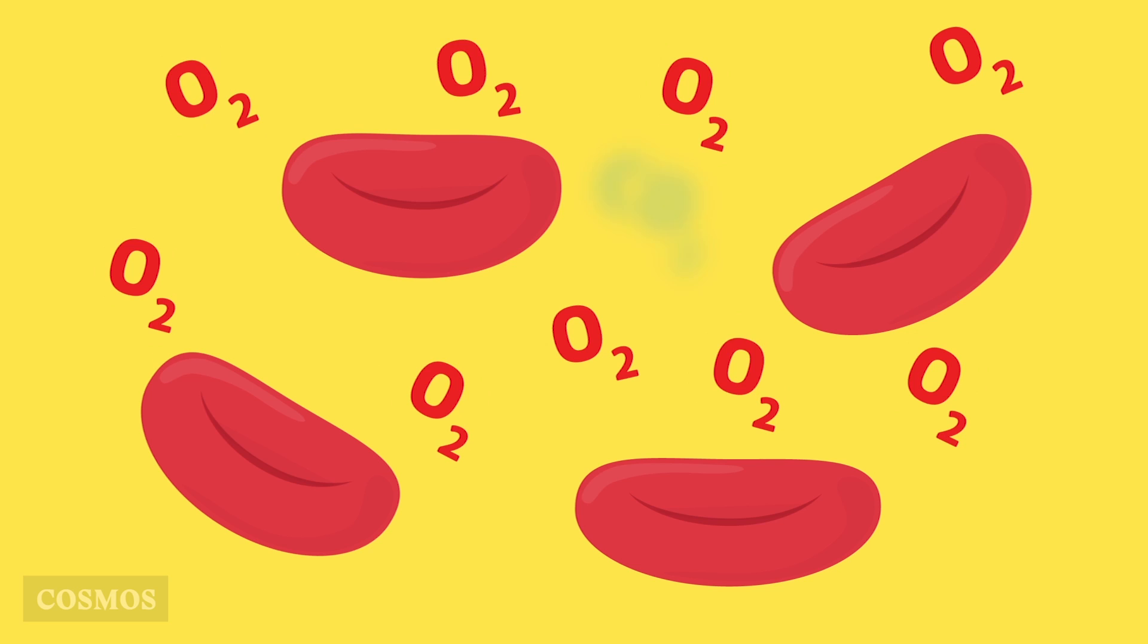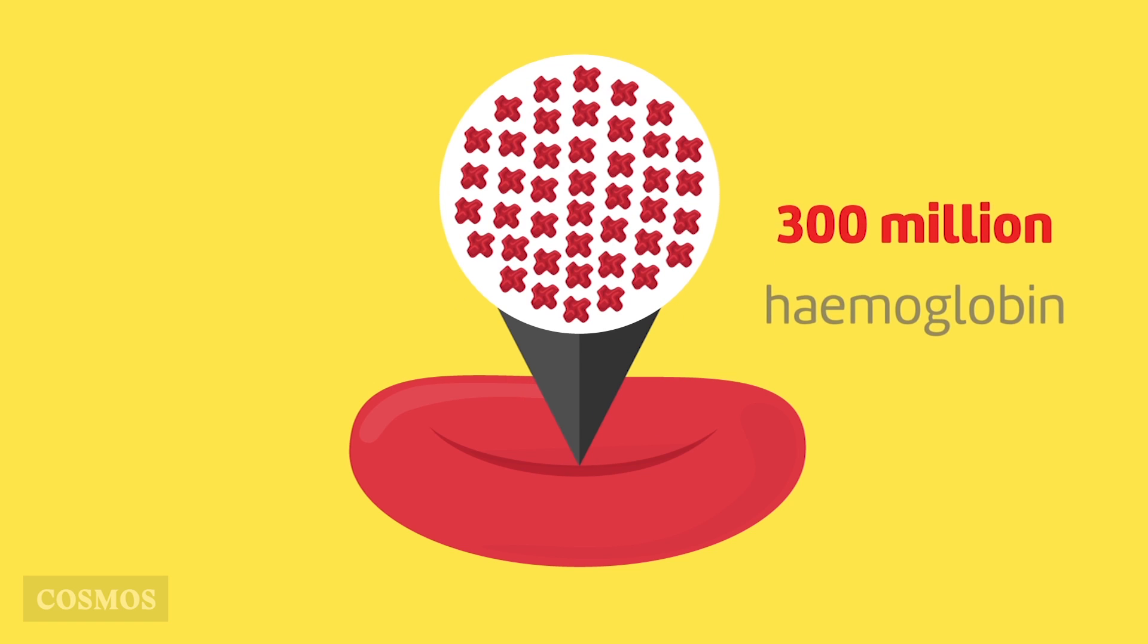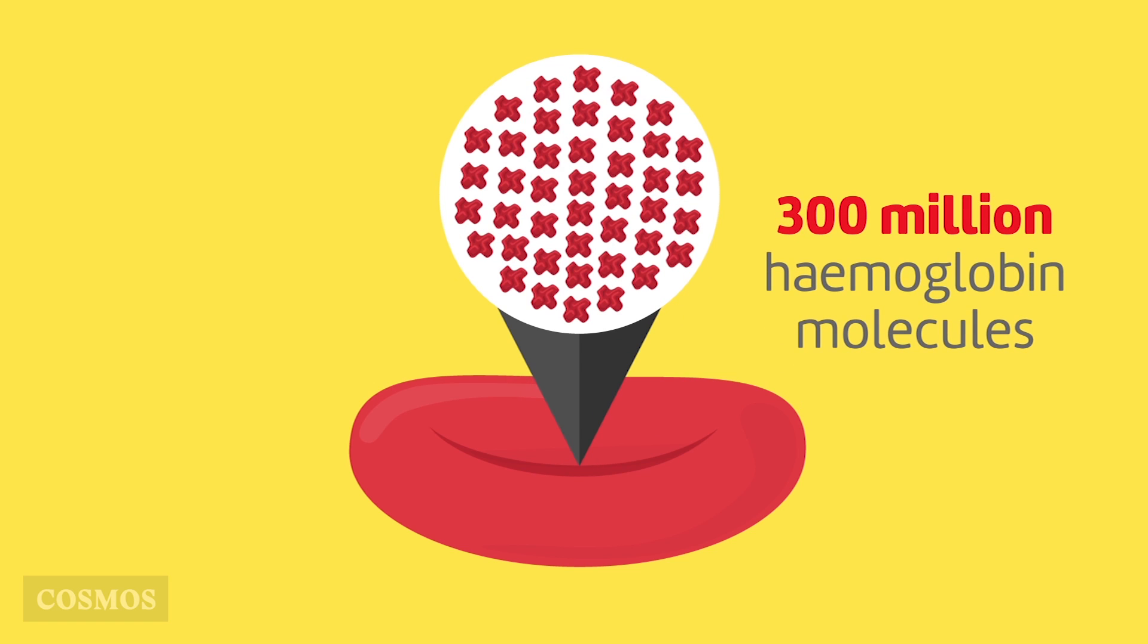The rest is red blood cells. These are cells specialized to transport oxygen, and they help move carbon dioxide too. Each red blood cell has almost 300 million hemoglobin molecules, each of which can carry 4 oxygen molecules.